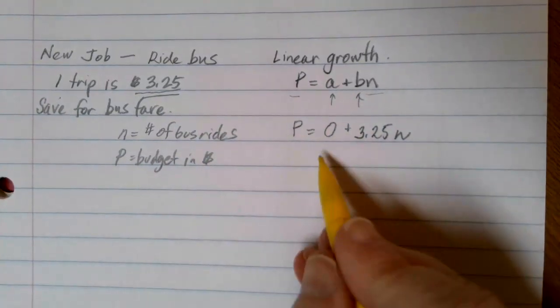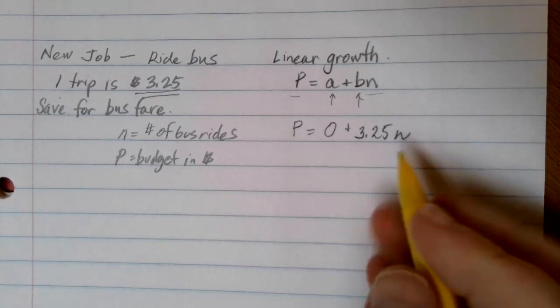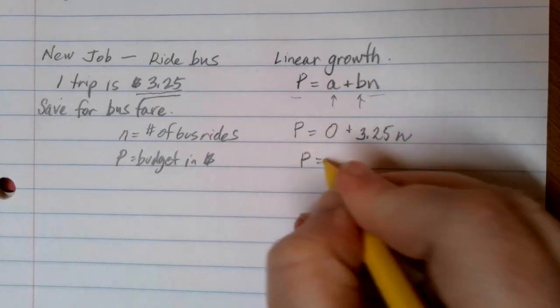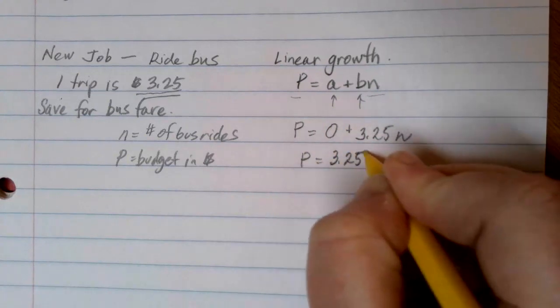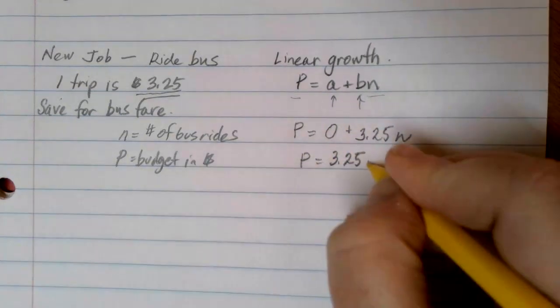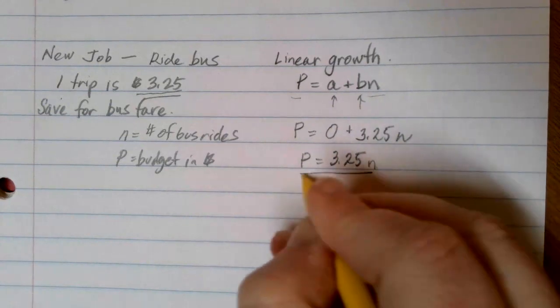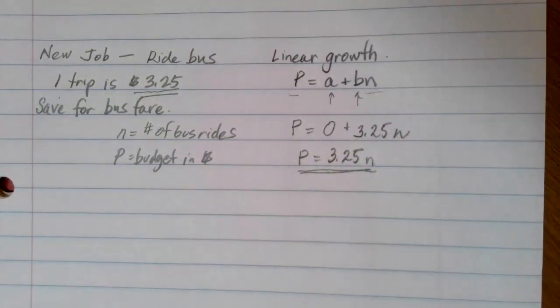Now because we're adding zero, that doesn't really change the equation. So you might want to work with this slightly simpler looking formula. P equals 3.25 times N. And this is my linear formula that I'm going to use. And now that I have a formula, I can start making predictions and plans for my best option.